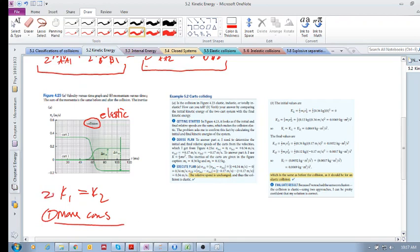Here's another tool. Let's look at this example. Here is the collision in 423. This is 423 - elastic, inelastic, or totally inelastic? It is elastic. How can you tell? If you measure the relative speeds, you'll see that they're unchanged.